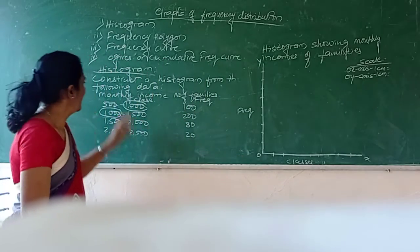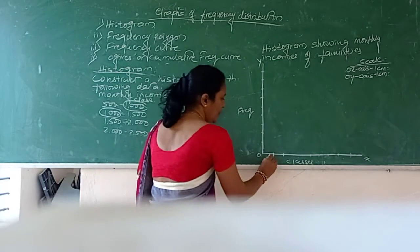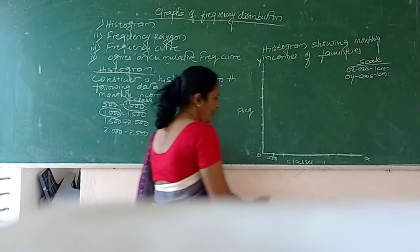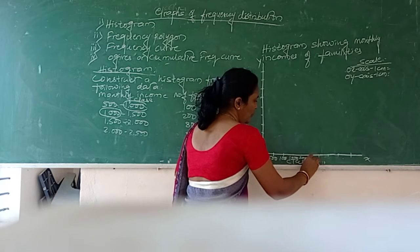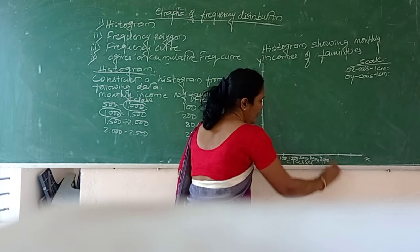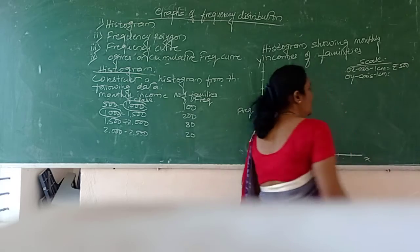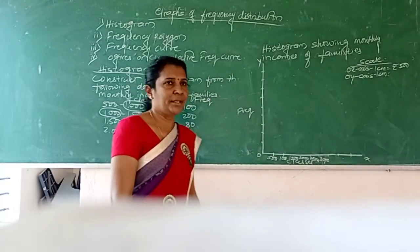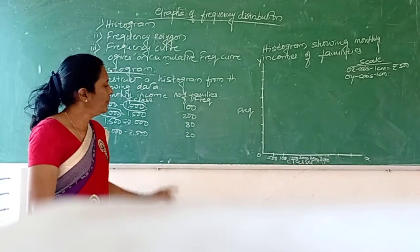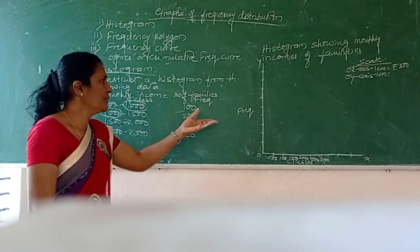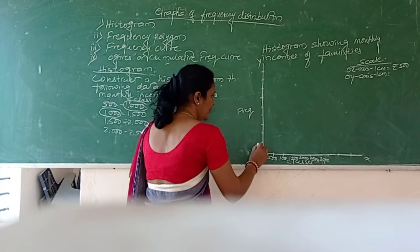Now for the scale, we will start with 500 and go to 2500. So 1 cm equals 500 rupees: 500, 1000, 1500, 2000, 2500. On y-axis, look at frequencies or number of families. Minimum 20, maximum 200. I am going to take it as 20, 40, 60, 80, 100, 120, 140, 160, 180, and 200.